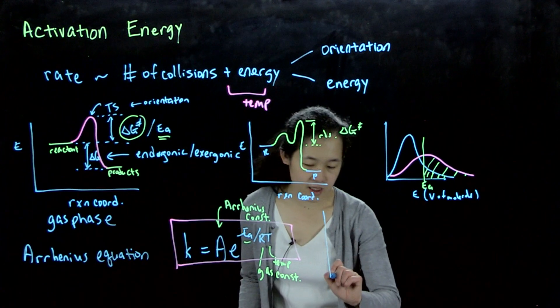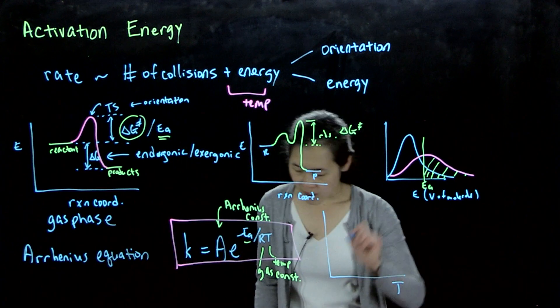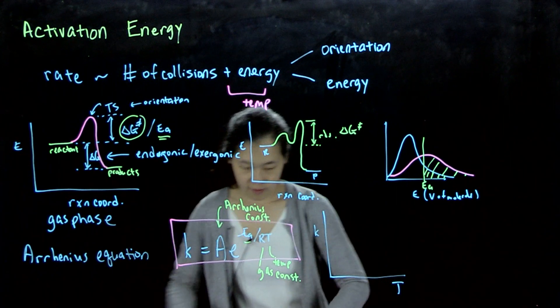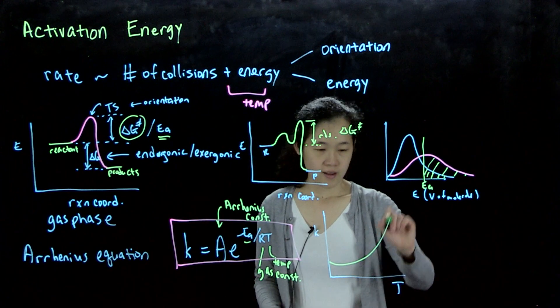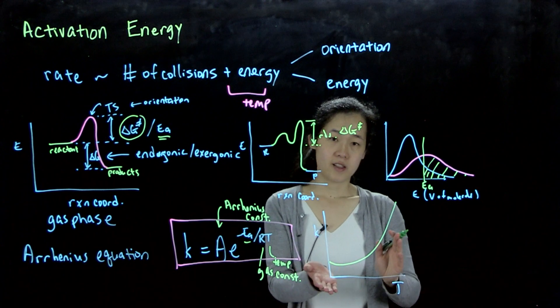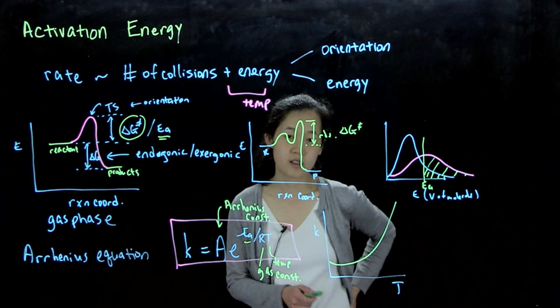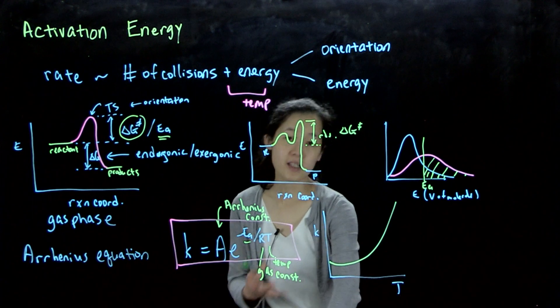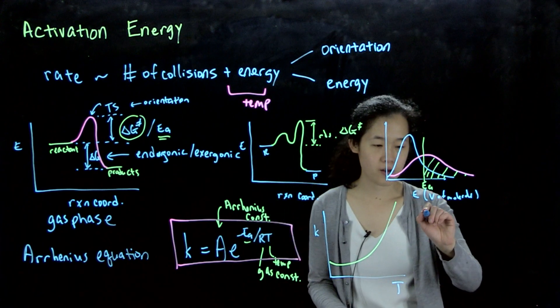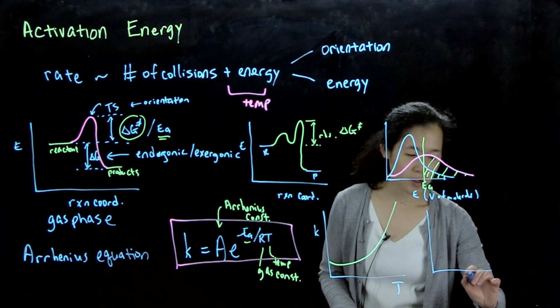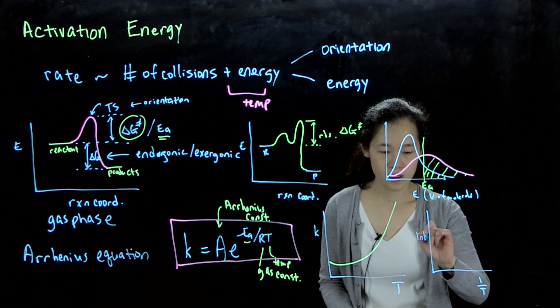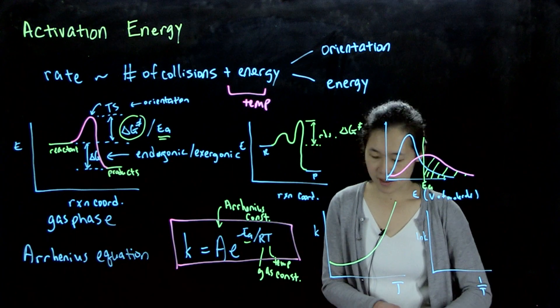So typically, when you plot this, if you plot T versus K, then we'll have some sort of exponential type thing. And then here is our plot. So reaction rate increases with temperature. This isn't as useful to use, so often you'll use a linearized form. So what you do is you plot 1 over T versus the natural log of K. And what we should get instead is a straight line.